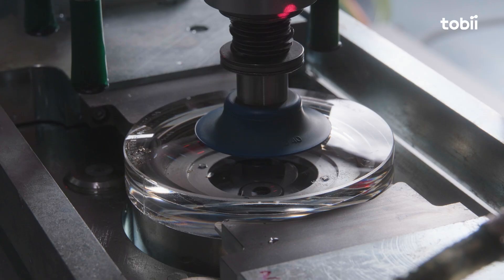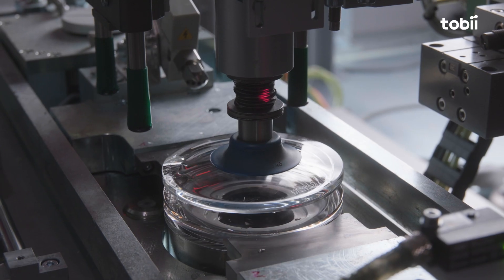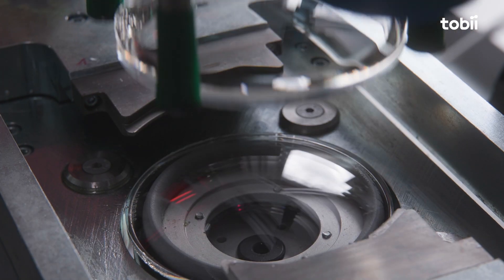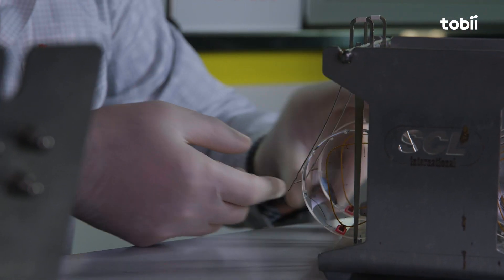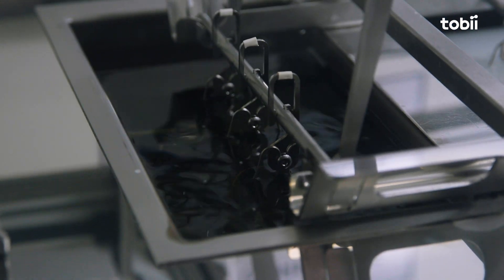Within a few seconds, the raw lens is basically finished. The molds can be removed and reused. Standard ophthalmic processes are used to apply a hard coating and an anti-reflective coating to get the final product.